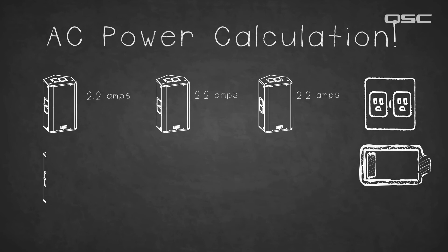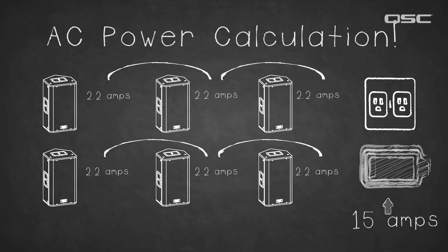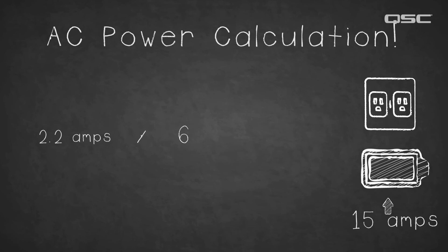So if we keep going, we can multiply the amps that each loudspeaker draws until we reach our limit, or as close as we can get without exceeding it. On a 15 amp outlet, that gives us up to 6 K.2 loudspeakers that can be connected at once. 2.2 amps multiplied by 6 gives us 13.2 amps.